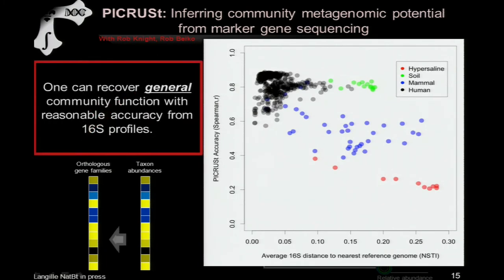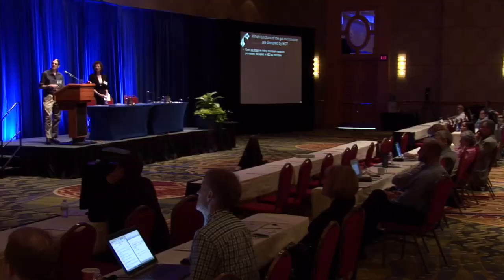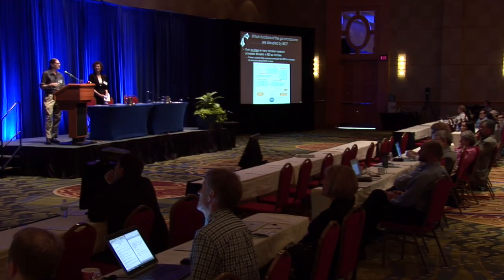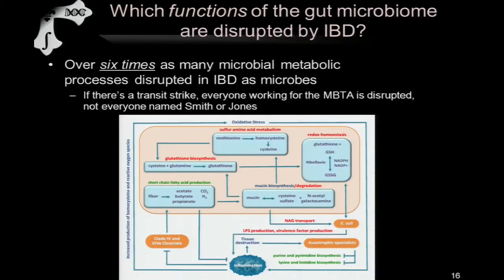To wrap up: one can recover general community function this way — again, this is just a prediction — and we were able to determine that there are over six times as many processes disrupted in IBD as there are microbes. This allows us to start assembling pathway maps for the whole community, specifically as they are perturbed in a dysbiotic state such as Crohn's and Colitis.